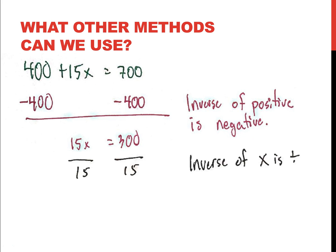And then I have, of course, the inverse of multiplication, 15 times x is division. So, I divide both sides by 15, and it equals 20 weeks or 20 payments of $15 each. Awesome.